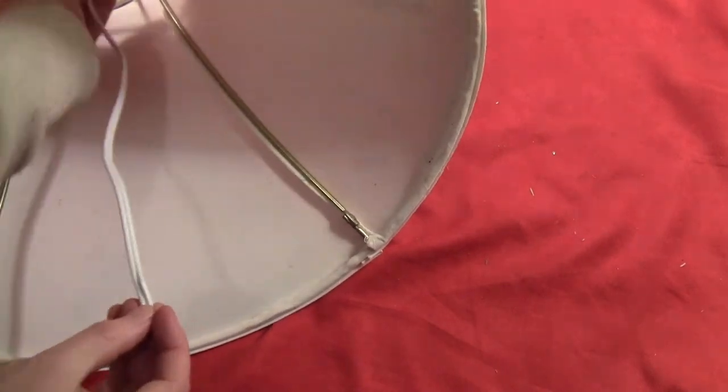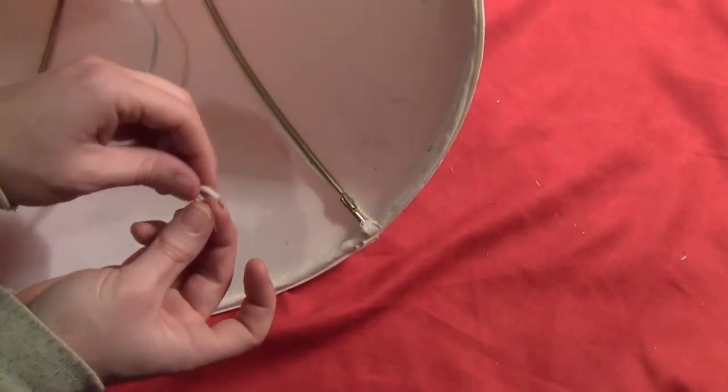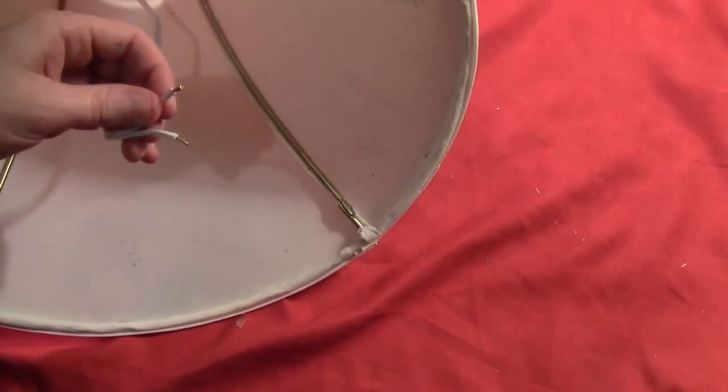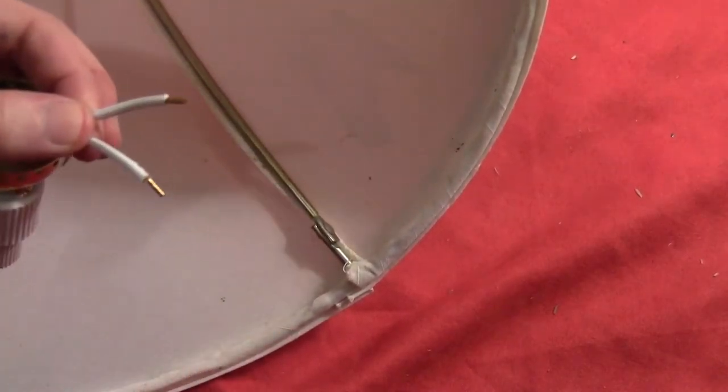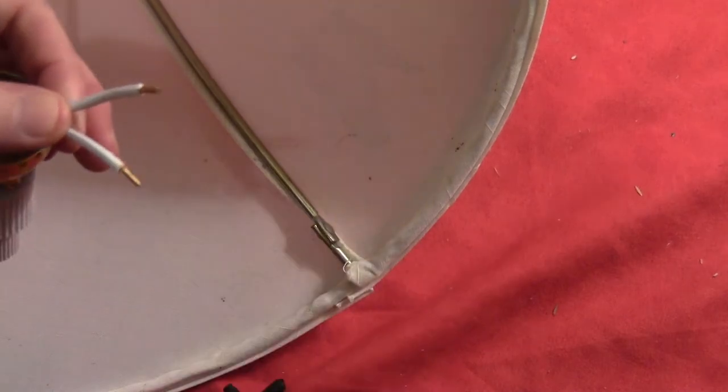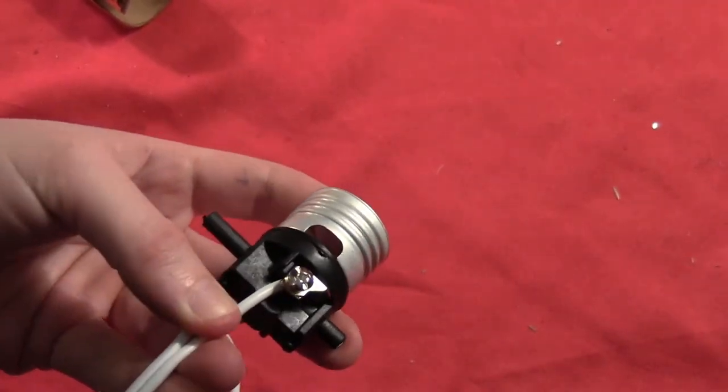So then take your cord and slip it through the hole at the top of the lampshade. And slip it through the little metal disc that comes with the kit. And now there's two wires. They're a little bit different so slip them up through the bottom of the socket. And then read your instructions very carefully to make sure you put the correct wire on the correct side.